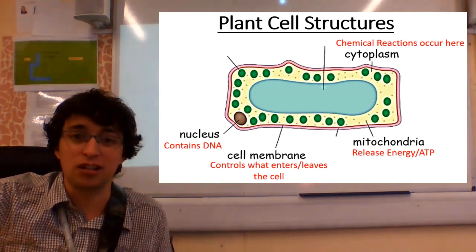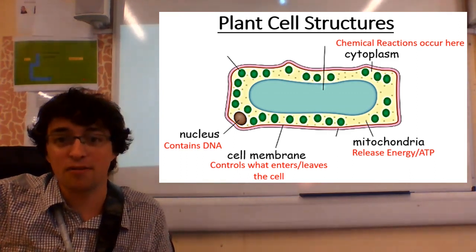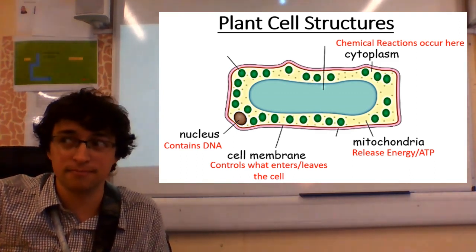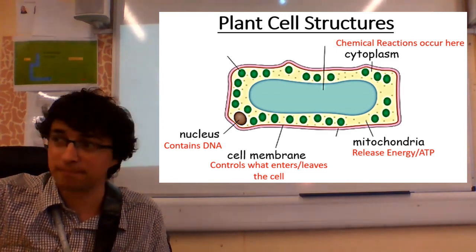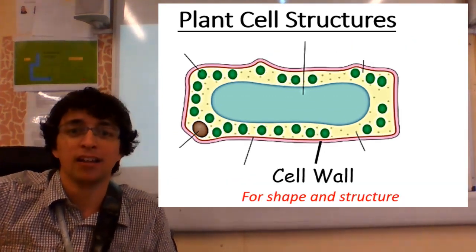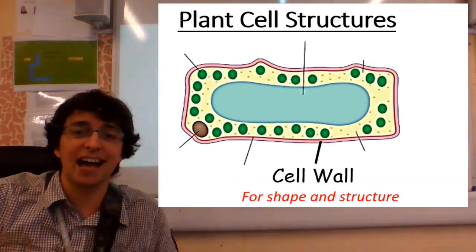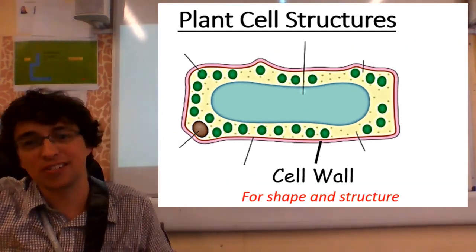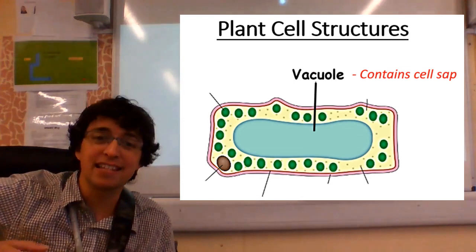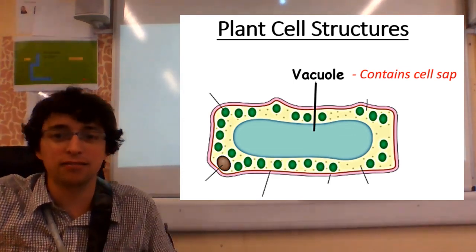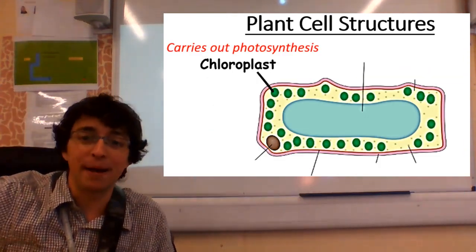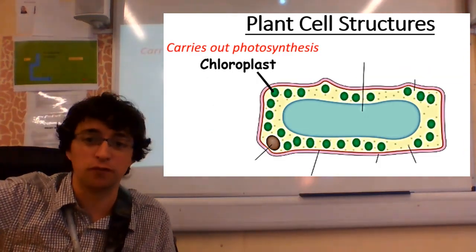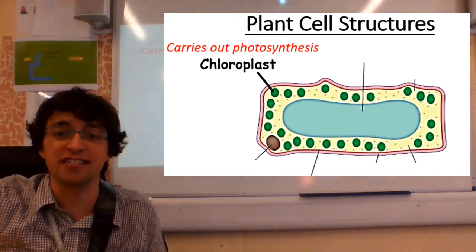Plant-cells have a nucleus, membrane, and cytoplasm. Plant-cells have cell walls. Plant-cells have vacuoles. Plant-cells have chloroplasts for synthesis.